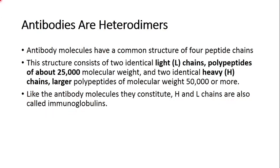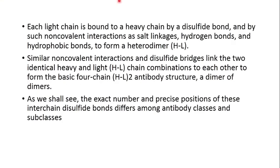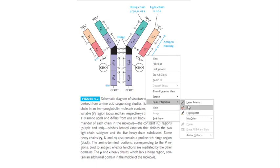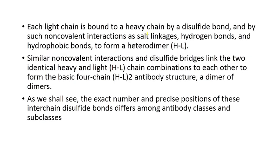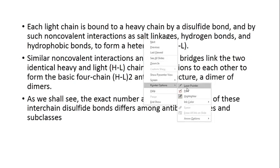Each light chain is bound to a heavy chain by a disulfide bond and by non-covalent interactions such as salt linkages, hydrogen bonds, and hydrophobic bonds to form the heterodimer. In the heavy and light chain there are disulfide bonds, salt bridges, hydrophobic interactions, and hydrogen bonds — all of these stabilize the dimerization of the light and heavy chains.